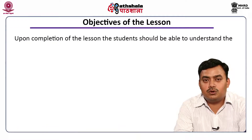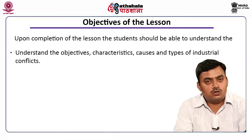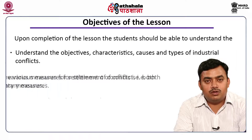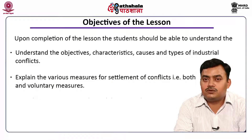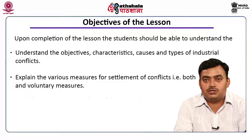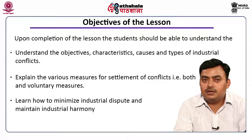Upon completion of this module, a student should be able to understand the characteristics, causes, and types of industrial conflicts. He will be able to explain the various measures for settlement of conflicts, that is both statutory and voluntary measures. He will also be able to learn how to minimize industrial dispute and maintain industrial harmony.